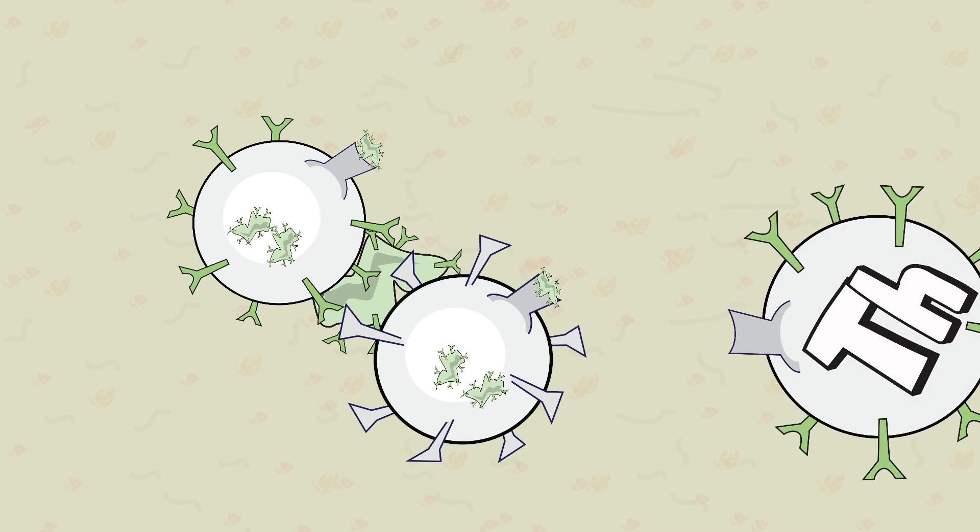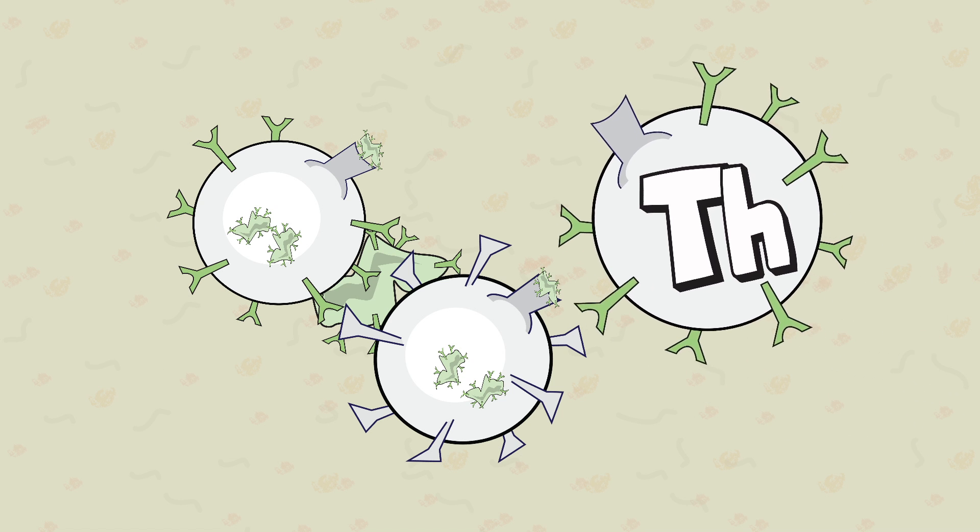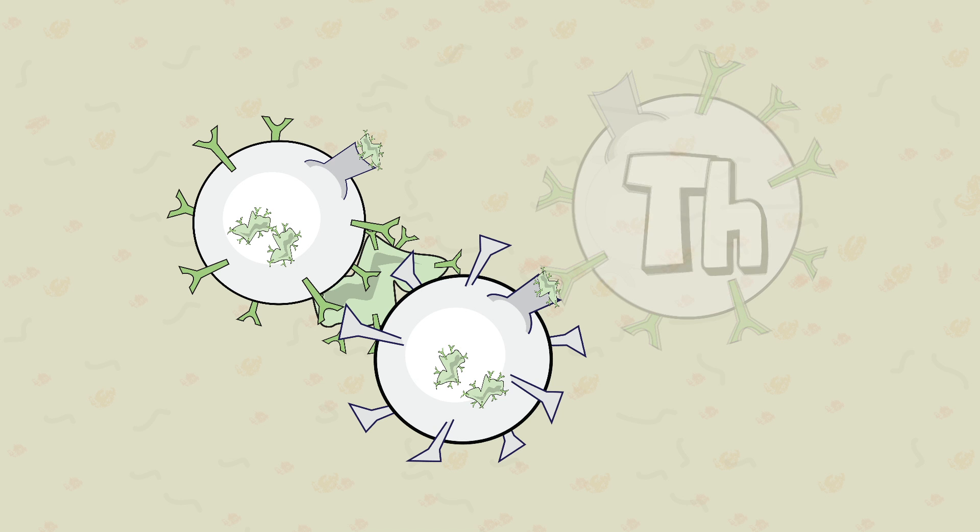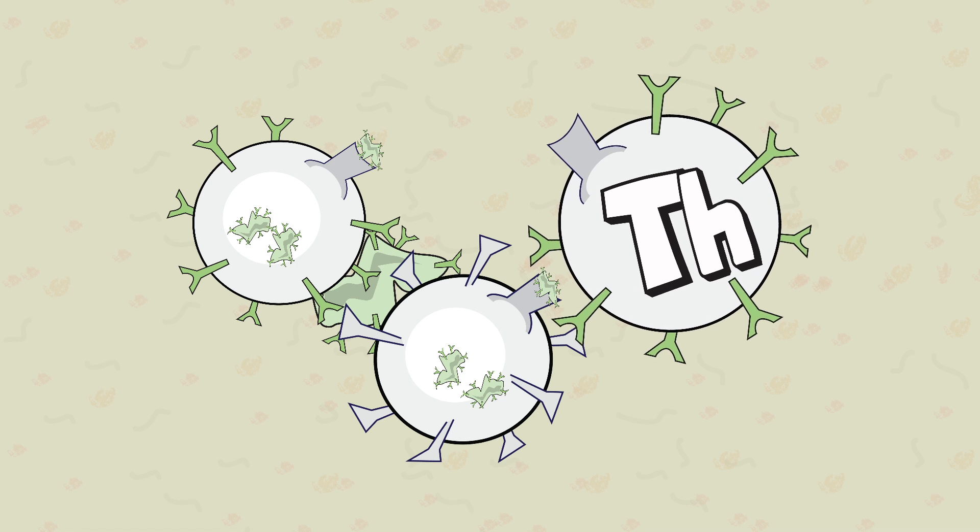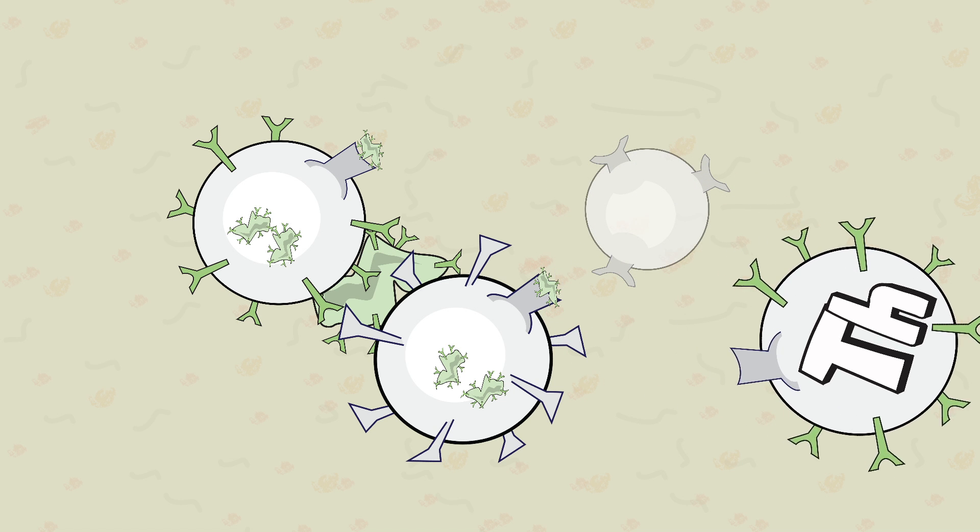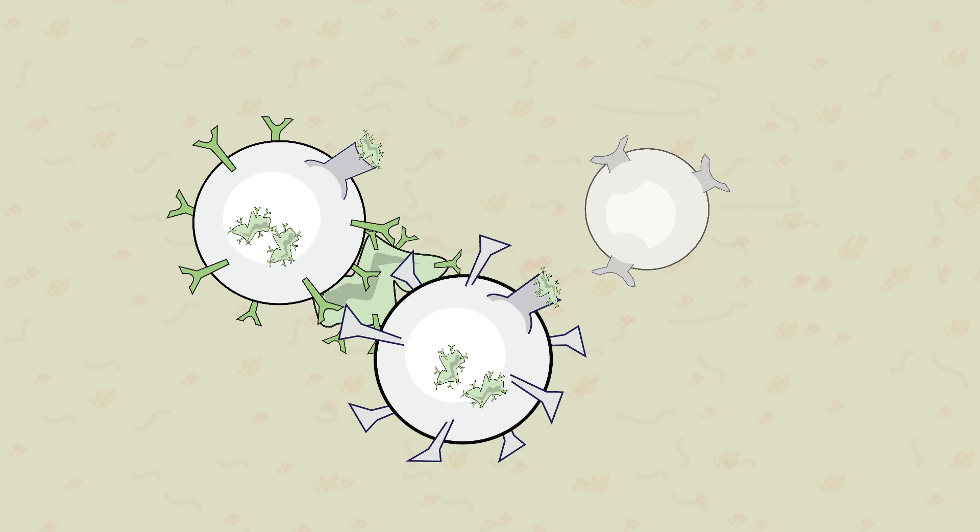When the helper T cell comes into contact with the dendritic cell, it will bind to the antigen-presenting marker. This activates the T cell, which then divides into both memory cells and effector cells. The memory cell is basically a copy which remains circulating in the body, ready for any future attacks by this specific antigen.